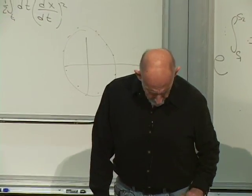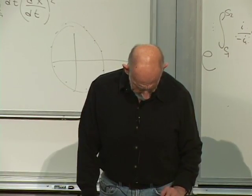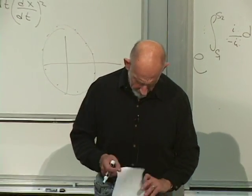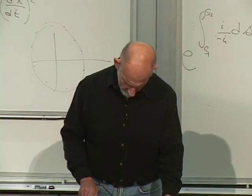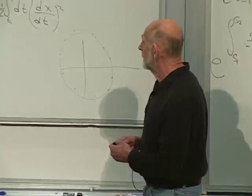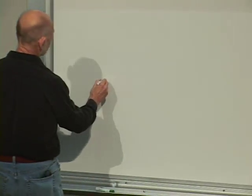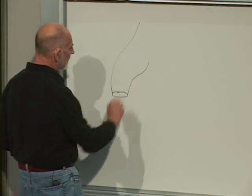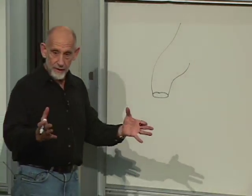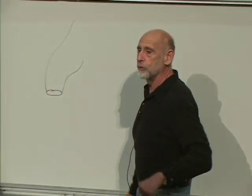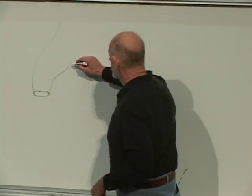Now let's come to string theory. The same kind of setup, but now a particle is not a point — it's a string. Its world history is not a world line but a surface. For open strings it's a ribbon; for closed strings it's a tube, usually called a world sheet.